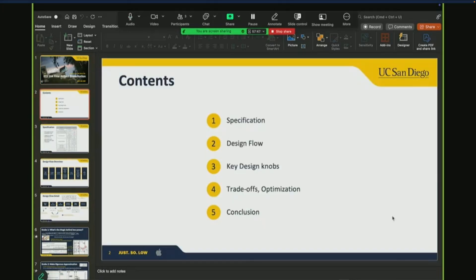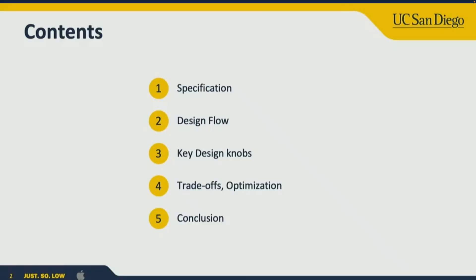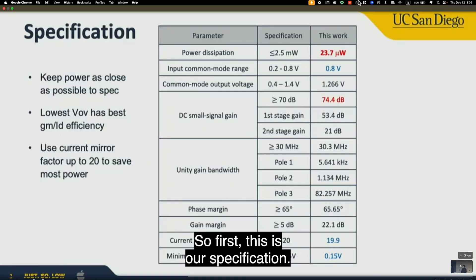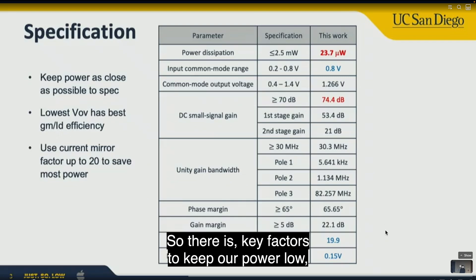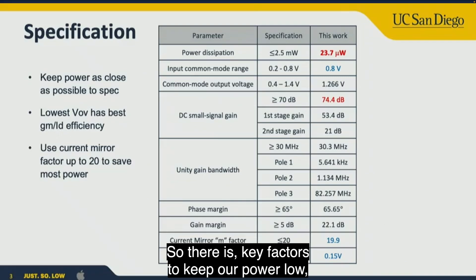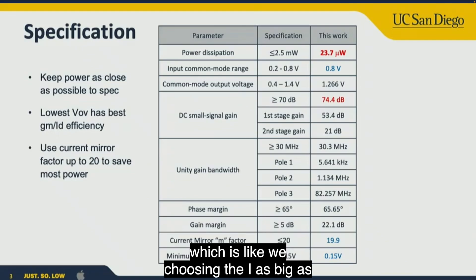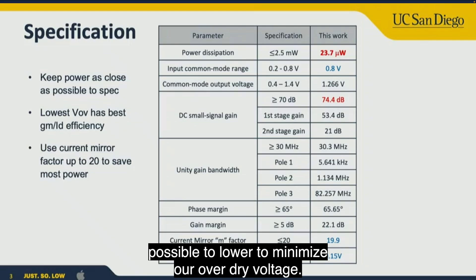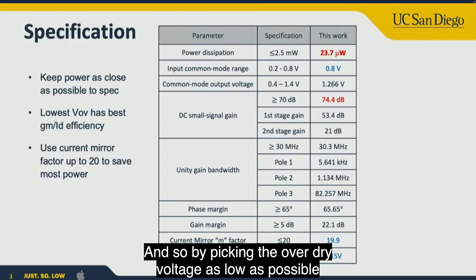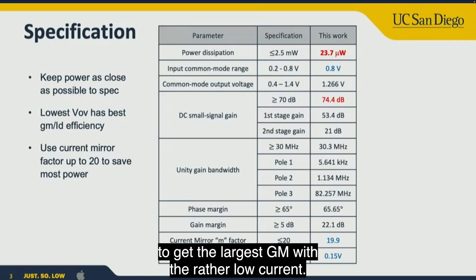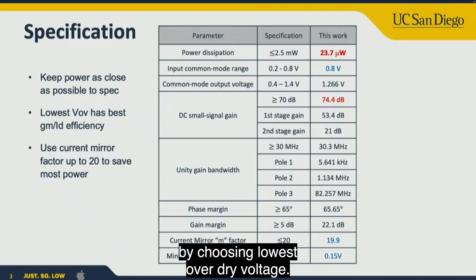First, these are our specifications. The key factors to keep power low are: choosing the input overdrive voltage as low as possible to minimize power, and picking the lowest overdrive voltage to get the largest gm at a relatively low current, so we achieve the highest efficiency.